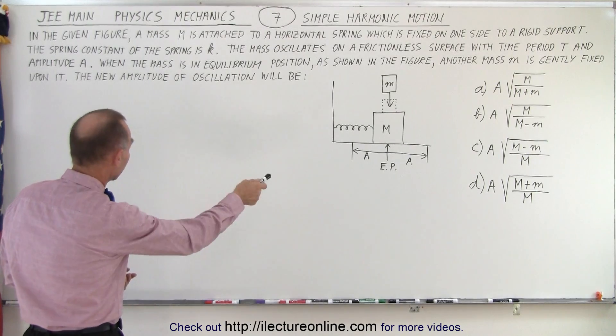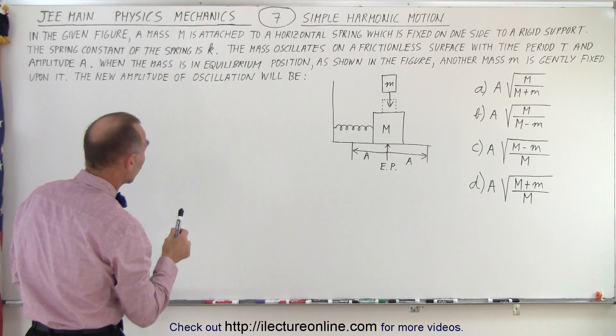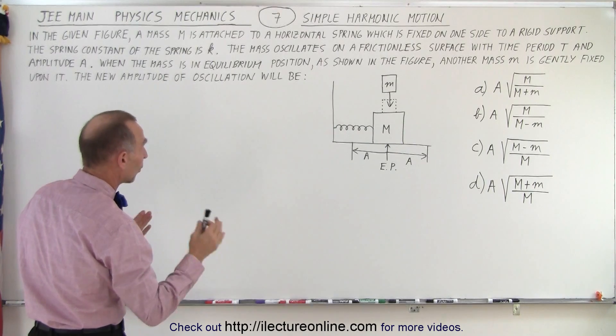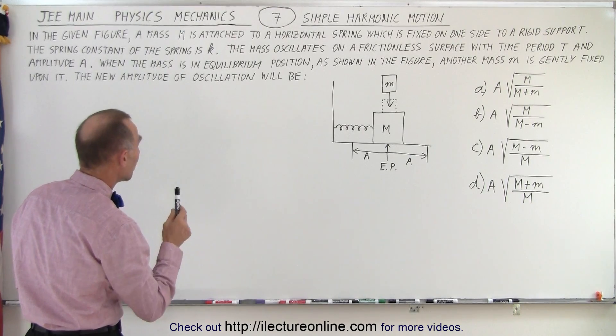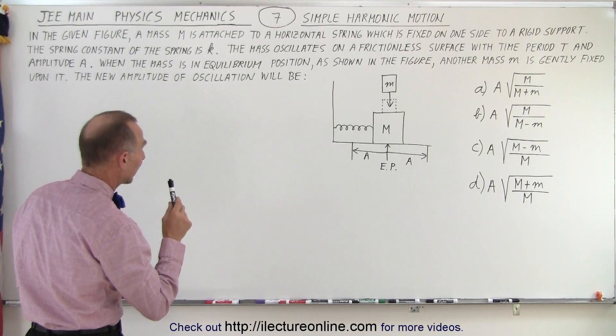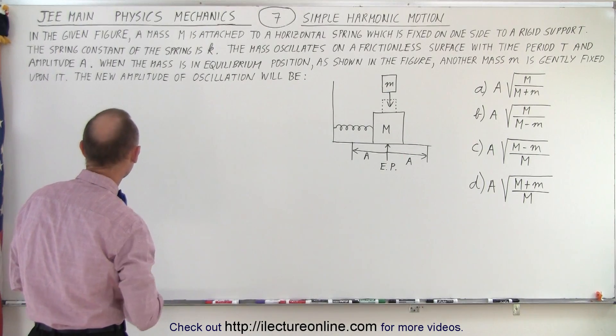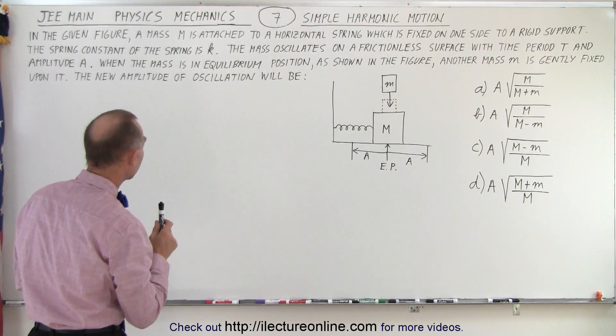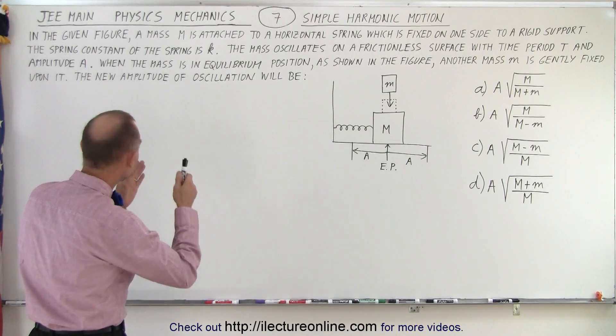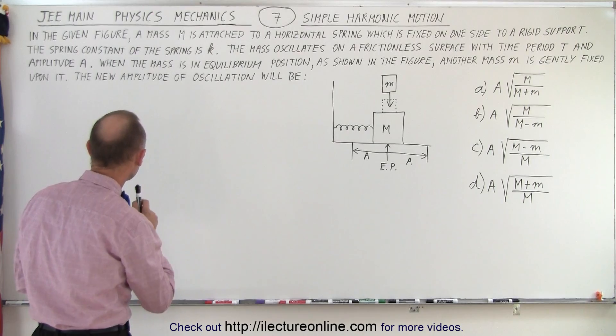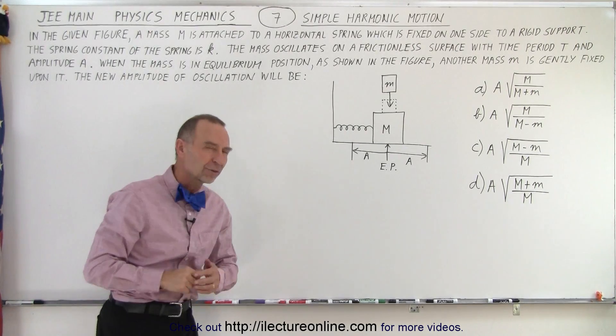In the given figure, a mass m is attached to a horizontal spring which is fixed on one side to a rigid support. The spring constant of the spring is K. The mass oscillates on a frictionless surface with time period T and amplitude A. When the mass is in equilibrium position, another mass is gently fixed upon it. The new amplitude of oscillation will be, and they give us four possible answers.